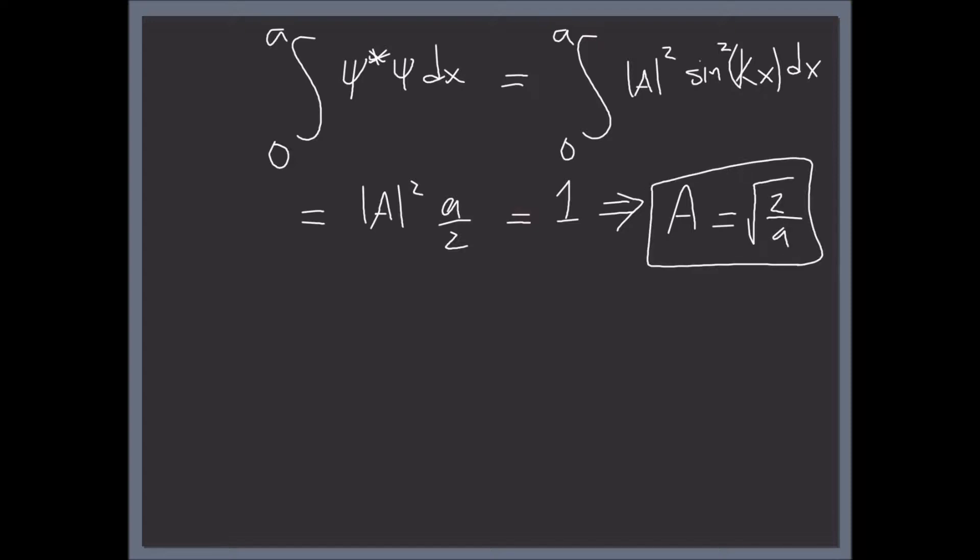So that's big A, and finally the final solution for the wave function inside the infinite potential well is equal to square root of 2 divided by a times the sine of n times pi times x divided by a.